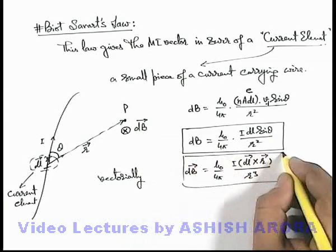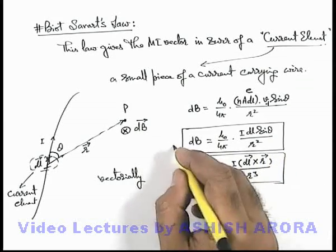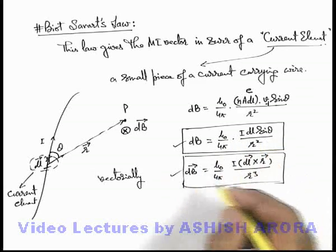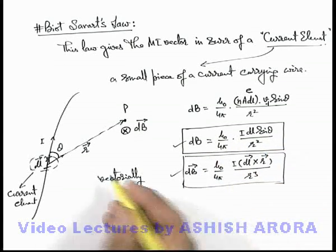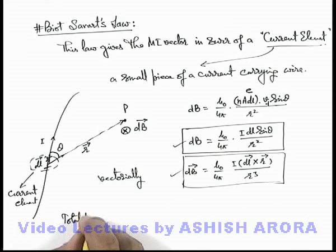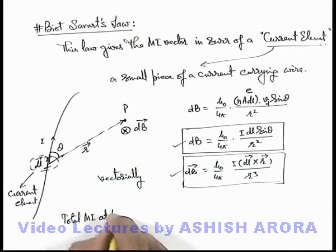So just be careful about the two results we obtained, this for the magnitude and this is the vector magnetic induction in the surrounding. So using this we can find out the total magnetic induction at point P.